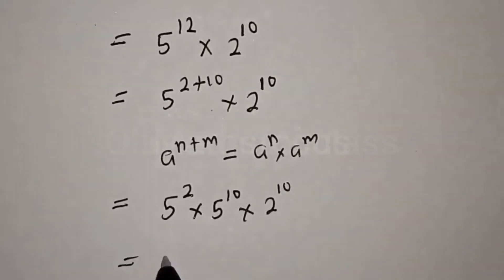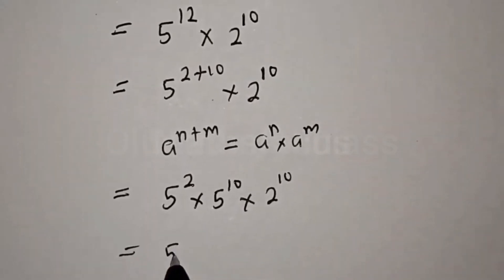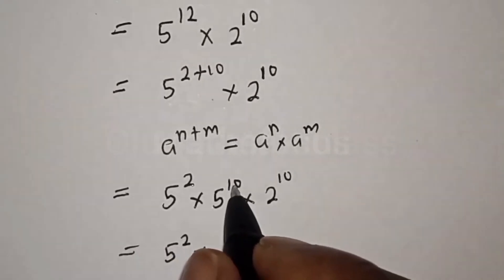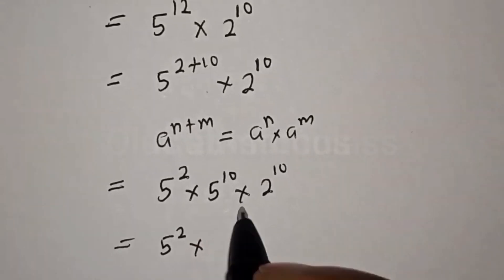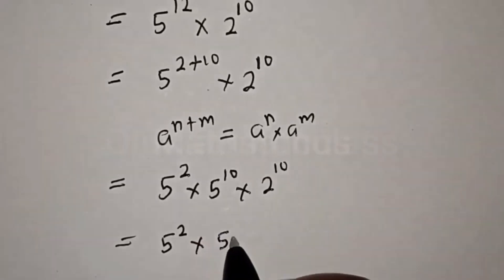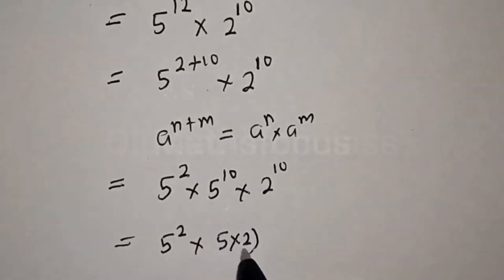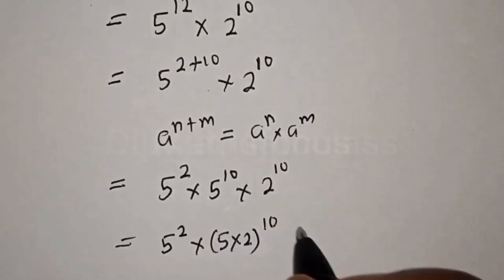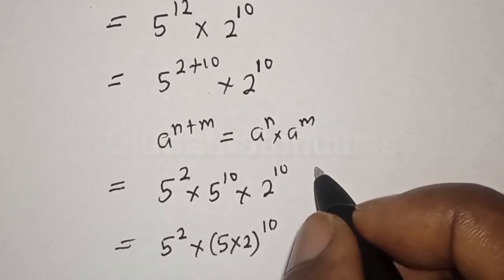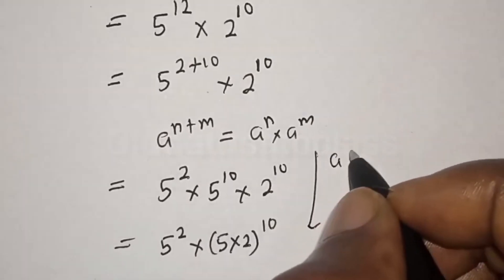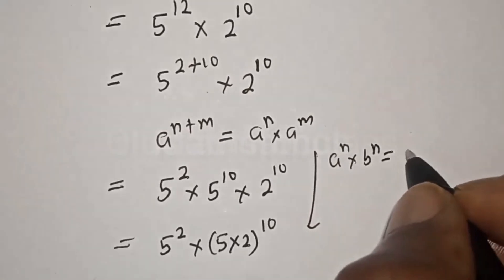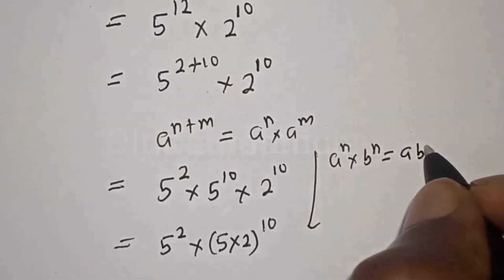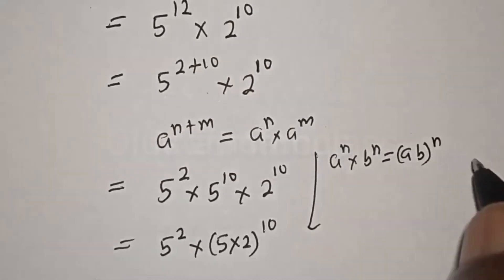Here we have 5 raised to power 2 multiplied by 5 raised to power 10 multiplied by 2 raised to power 10. This becomes 5 squared times 2 raised to power 10, using the exponential rule that a raised to power n multiplied by b raised to power n is equal to a times b raised to power n.